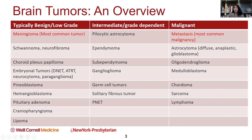For the malignant tumors, the most common type of malignant brain tumor is a metastasis. Almost always what we're seeing are metastatic tumors to the brain. Even though we think a lot about glioblastoma, it's actually much less common than a patient with a metastatic tumor, and that's just by virtue of the numbers of people that have cancer.